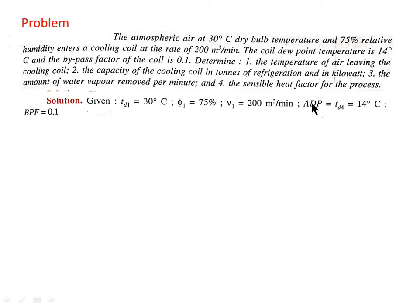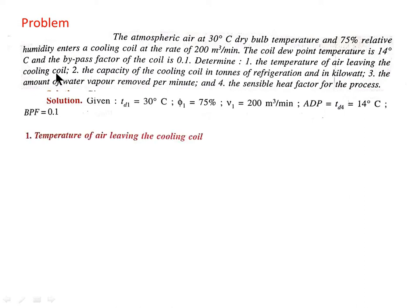The coil dew point temperature is 14°C, which can be termed as apparatus dew point (ADP). We will write it as Td4 = 14°C, and the bypass factor of the coil is given as 0.1. We need to determine the temperature of air leaving the cooling coil.